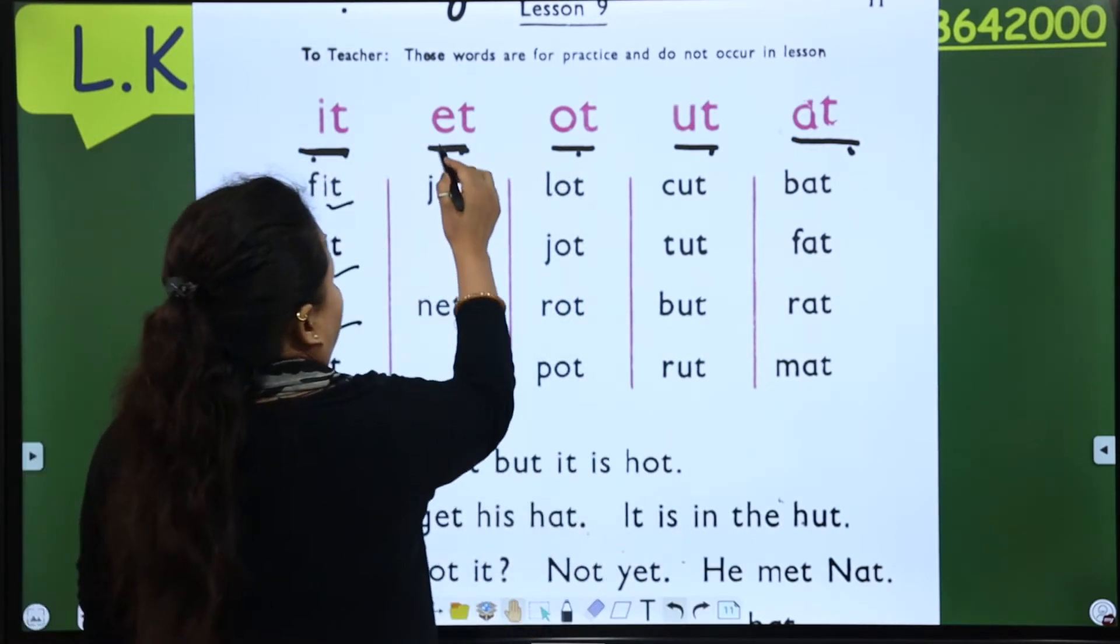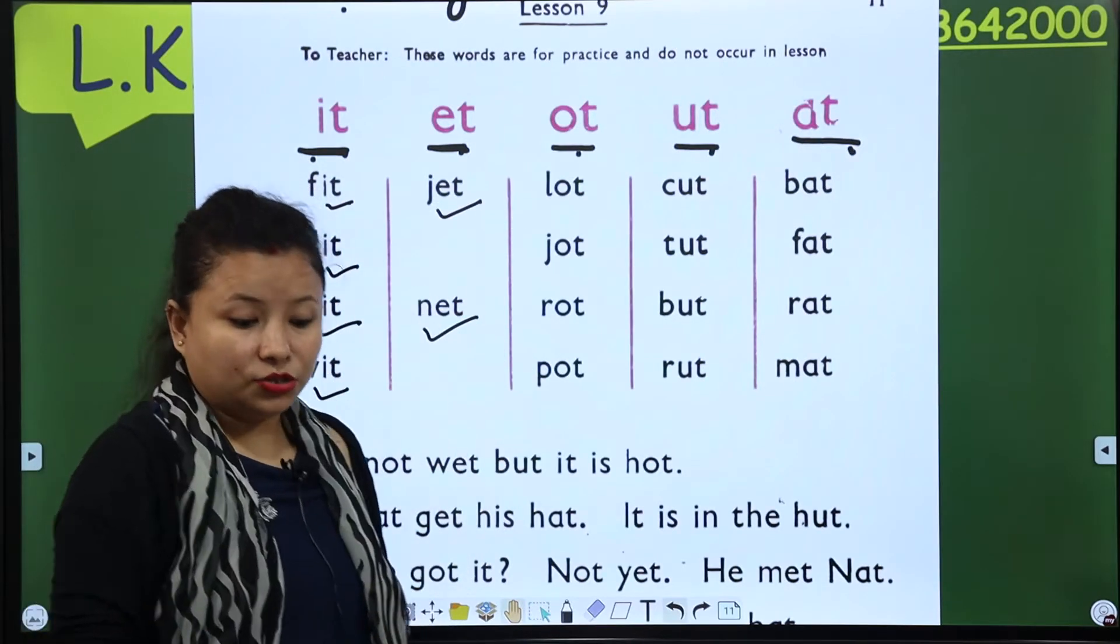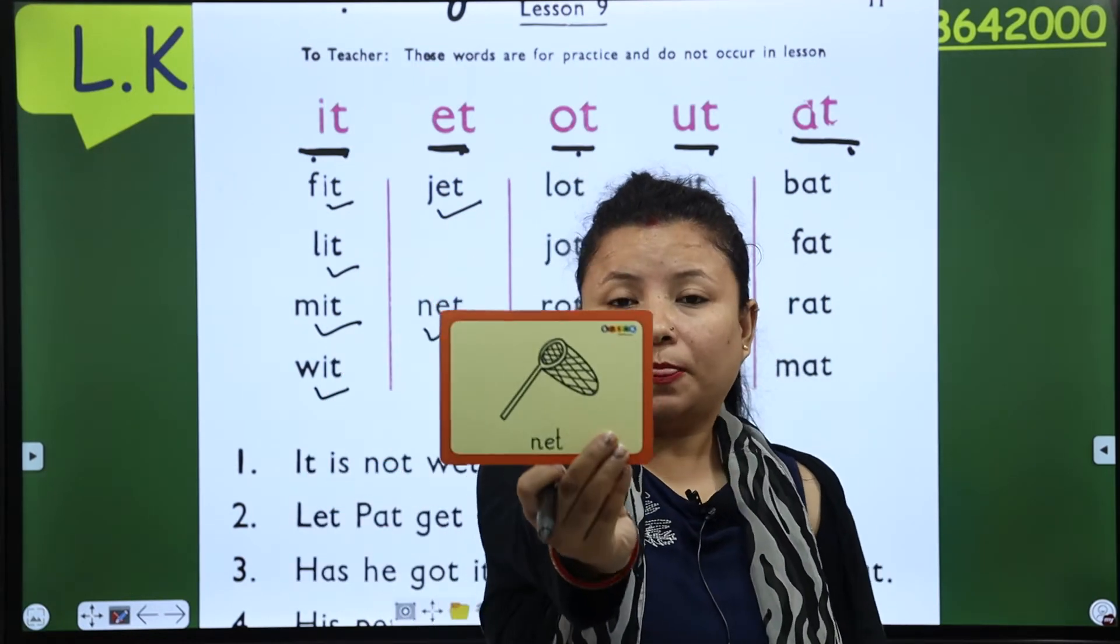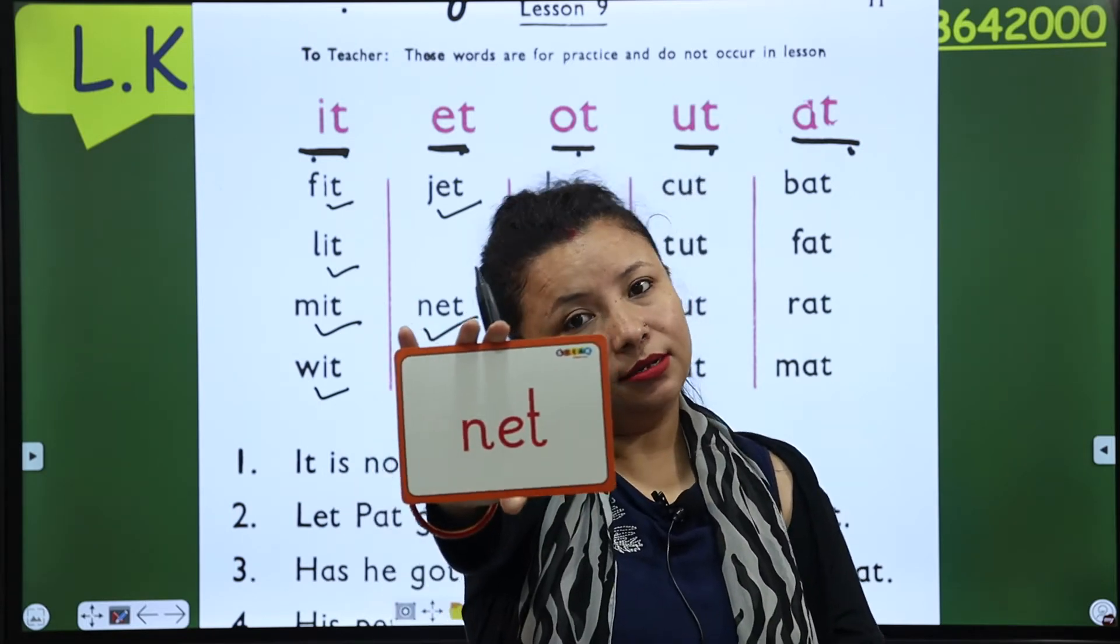Next is et. Jet, net. Jet, net. Jet and net. This is net. This is net. This is net and this is nevato, net.